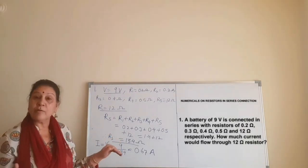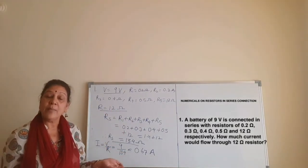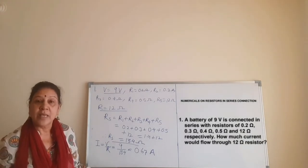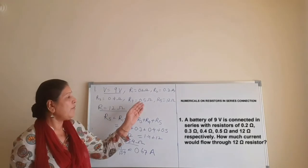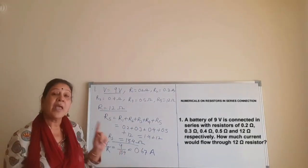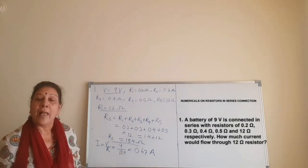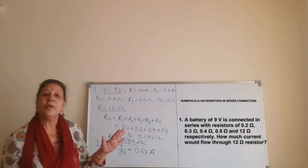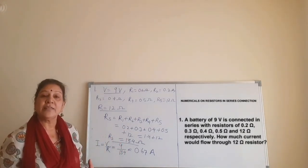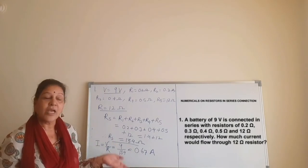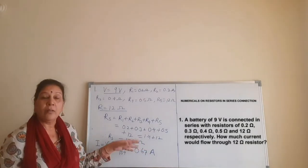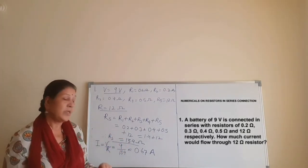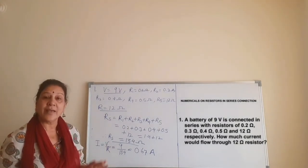What is the current through the 12 ohm resistor? Because in series the current is the same, the same 0.67 ampere flows through all resistors — whether 0.2, 0.3, 0.4, 0.5, or 12 ohm. That is the first question. We only used the formula: net resistance in series equals the sum of all resistances, which gave 13.4 ohm, then applied I = V / R to get 0.67 ampere, which is the same for all resistors connected in series.